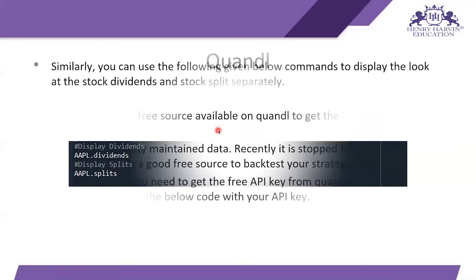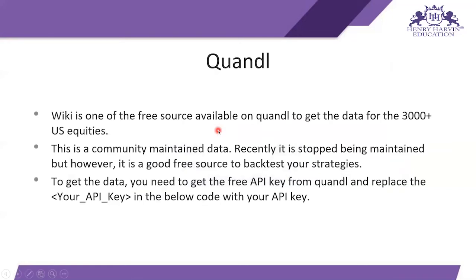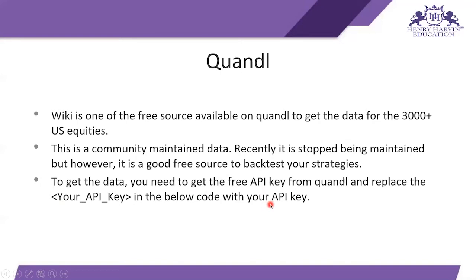Quandl Wiki is one of the free sources available on Quandl to get data for 3,000+ US equities. It is a community-maintained dataset — recently it stopped being maintained, but it is still a good free source to backtest your strategies. To get the data, you need a free API key from Quandl, which you replace in the code.